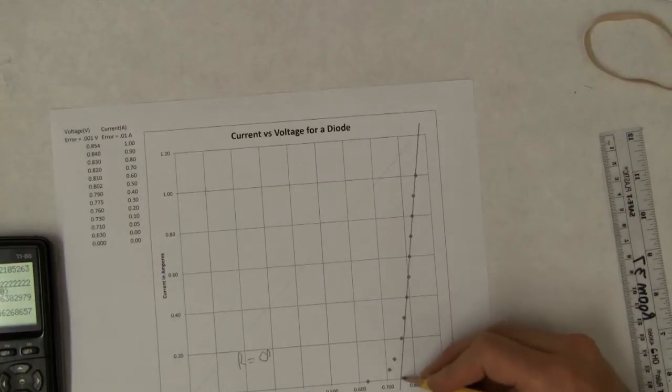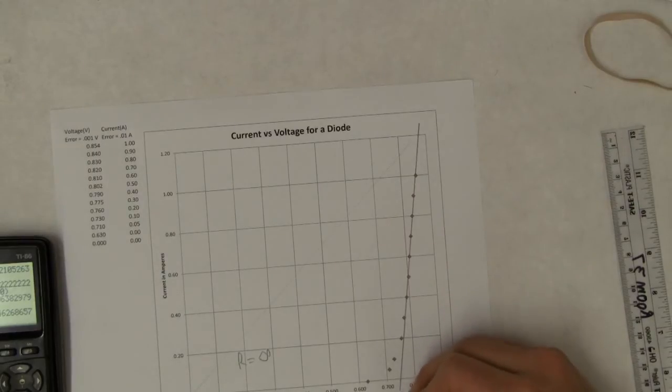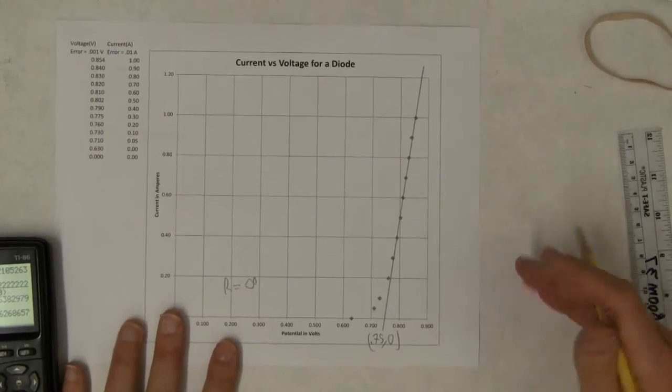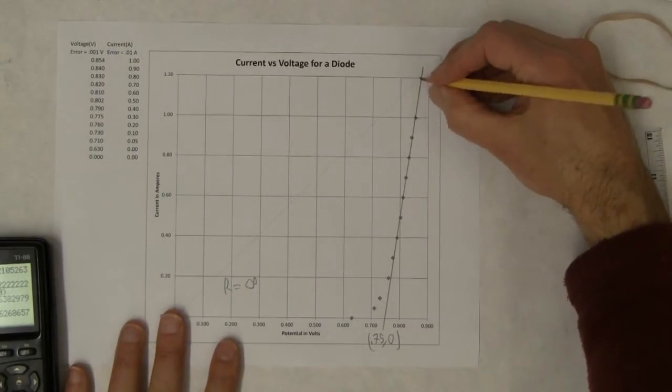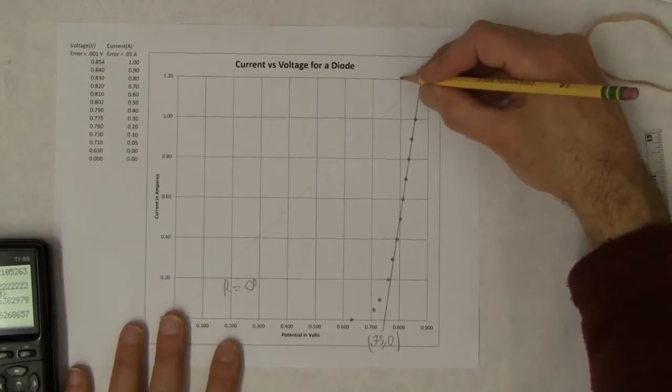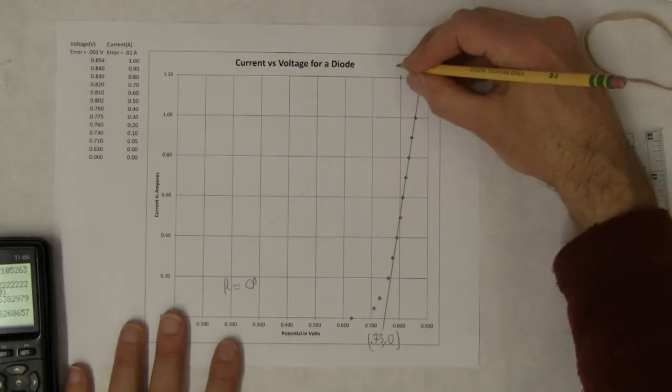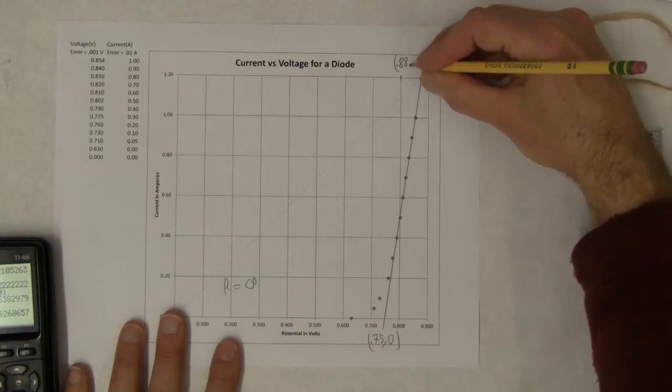So this one is over 0.75, and up zero, right there. And then this guy here is over, that's 0.8, that's 0.9, I'm going to say that's 0.88, and it's up 1.2 amps.